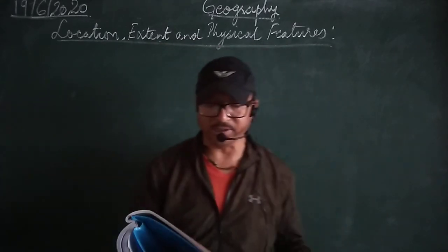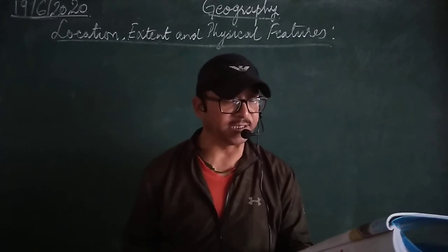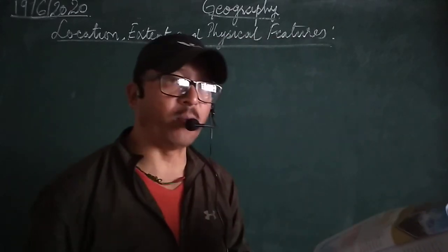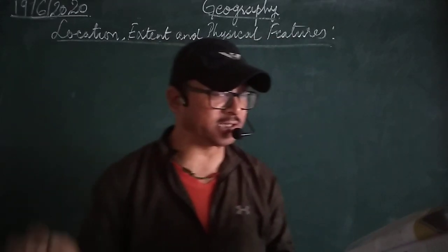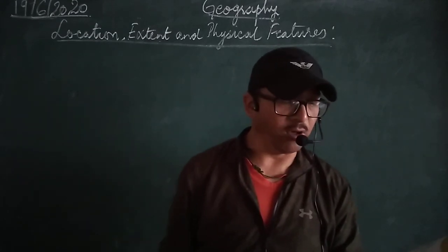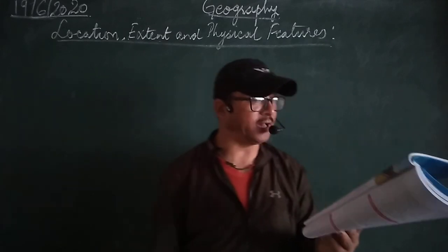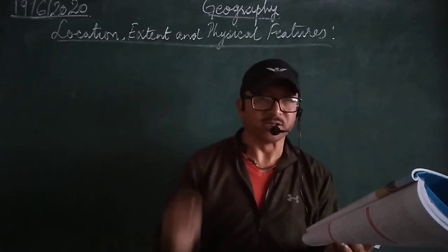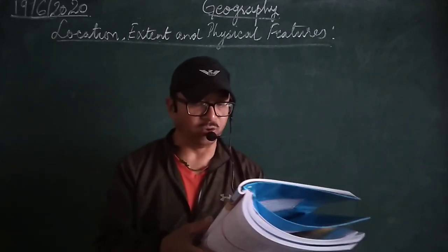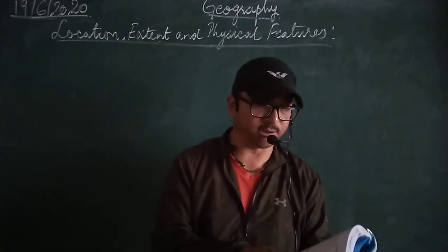About location and extent, I already explained that the latitudinal extent of India extends from 8 degrees 4 minutes North to 37 degrees 6 minutes North. The longitudinal extent is from 68 degrees 7 minutes East to 97 degrees 25 minutes East.